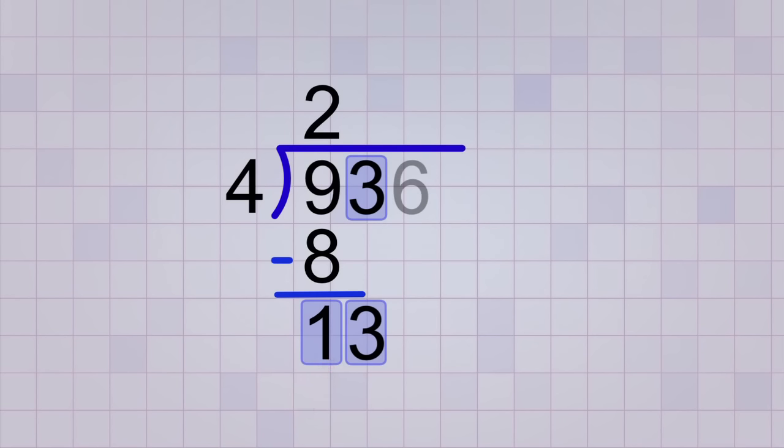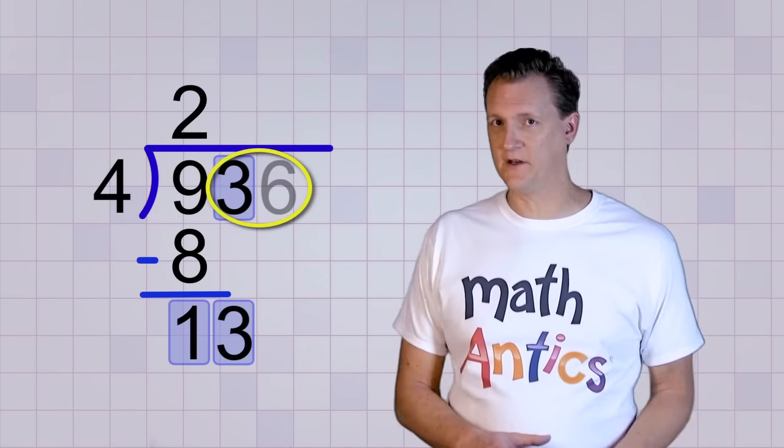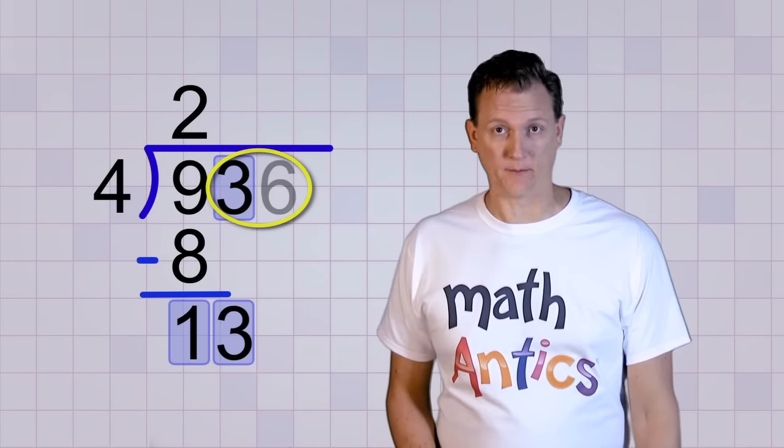When we do that, it looks like our remainder is 13. It's kind of like our remainder is teaming up with the next digit over. And if you think about it, that makes sense because the digits that we were ignoring during our first division step really are part of the remainder, because we still need to divide them.